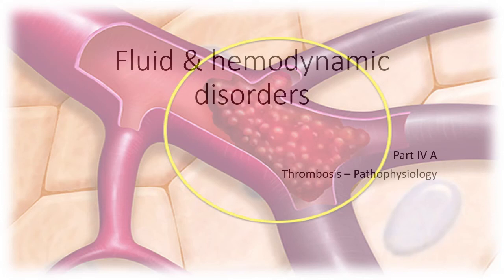Hi and welcome to Outline of Pathology. Today we will discuss another hemodynamic disorder: thrombosis. This is a bit of a broad topic to pack into a single video, so I will divide it into two videos. In this first part we will discuss the introduction and pathophysiology of thrombosis, and in the next video we will discuss the types, morphology and fate of thrombosis.